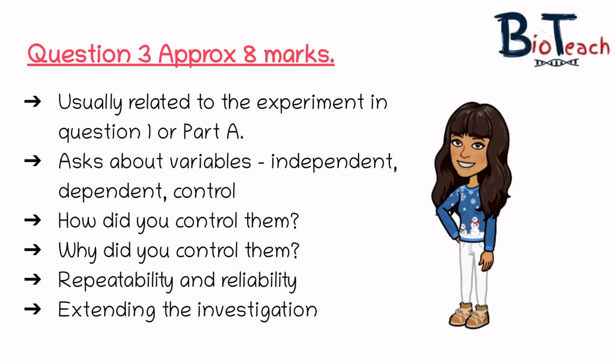The key thing to understand about question number three is that it's usually related to the experiment that you've carried out in part A and it's also related to the questions that you've done in the first part of the paper, mainly question number one. The question is worth around eight to ten marks, mostly eight marks, and it asks you about the variables — things like the independent variable, the dependent variable, and the control variables.